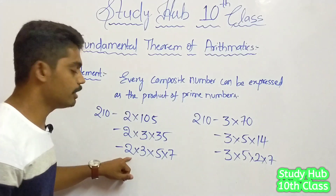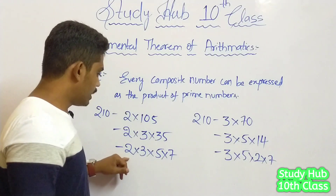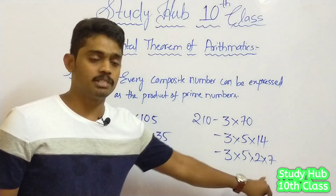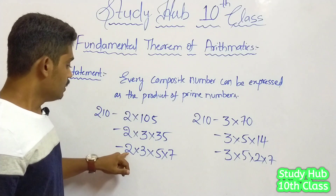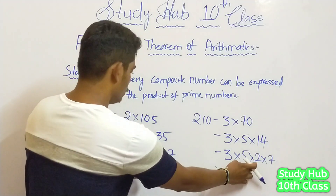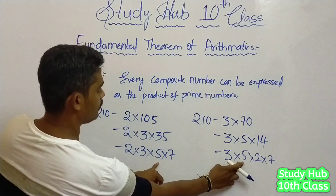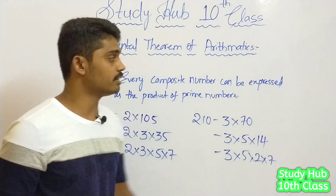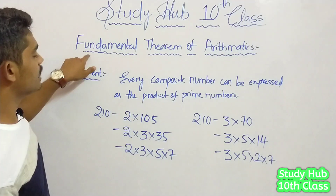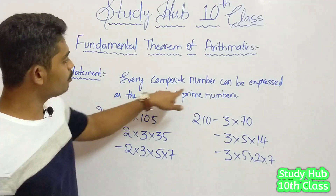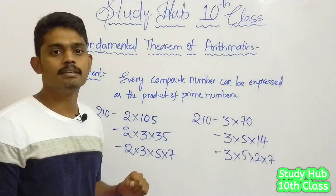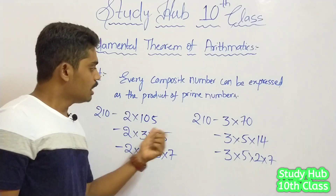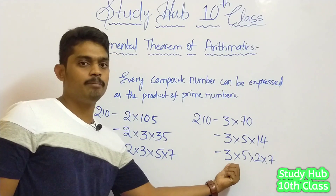Yes, there is a difference — the order of the prime numbers is different. But the numbers themselves are the same: 2, 3, 5, 7 in both cases. The order is different. This is what exactly the fundamental theorem of arithmetic says: every composite number can be expressed as the product of prime numbers, and there is a unique way of representing these composite numbers in the form of prime numbers.